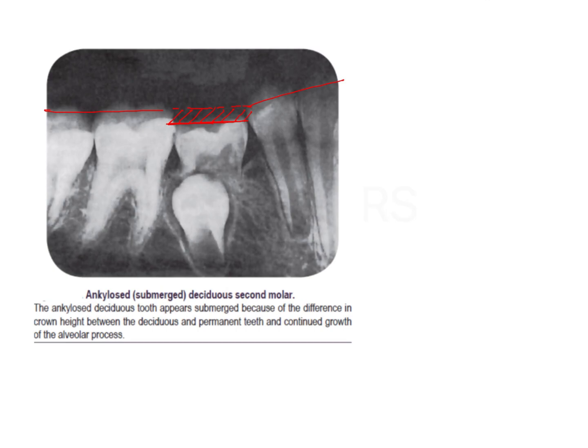Clinically, you can identify a submerged tooth with clinical assessment and radiograph. On the radiograph, although root resorption is significant, there is no mobility and the tooth fails to exfoliate. On percussion, there is a difference in sound — normally you get a cushioned kind of sound, but here you get a solid sound, which is suggestive of a submerged tooth.